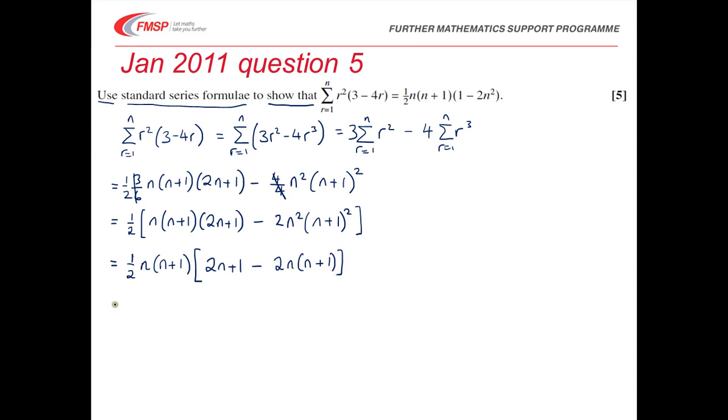I can't take out any more factors, so now I do need to multiply out what I've got in those square brackets: 2n plus 1 minus 2n squared minus 2n. And that gives me a half n, n plus 1, 1 minus 2n squared, as required.